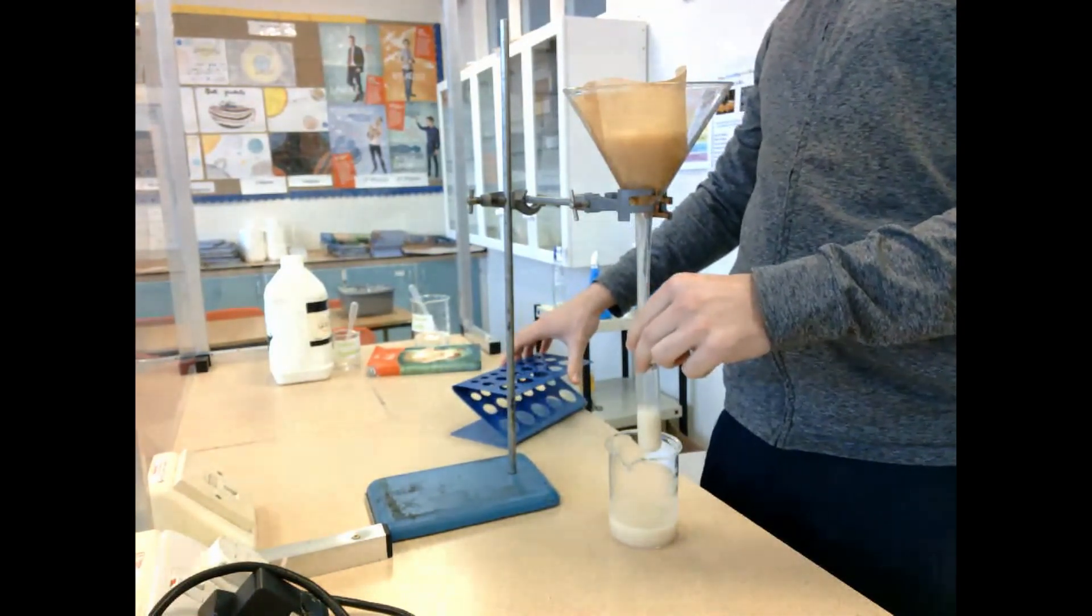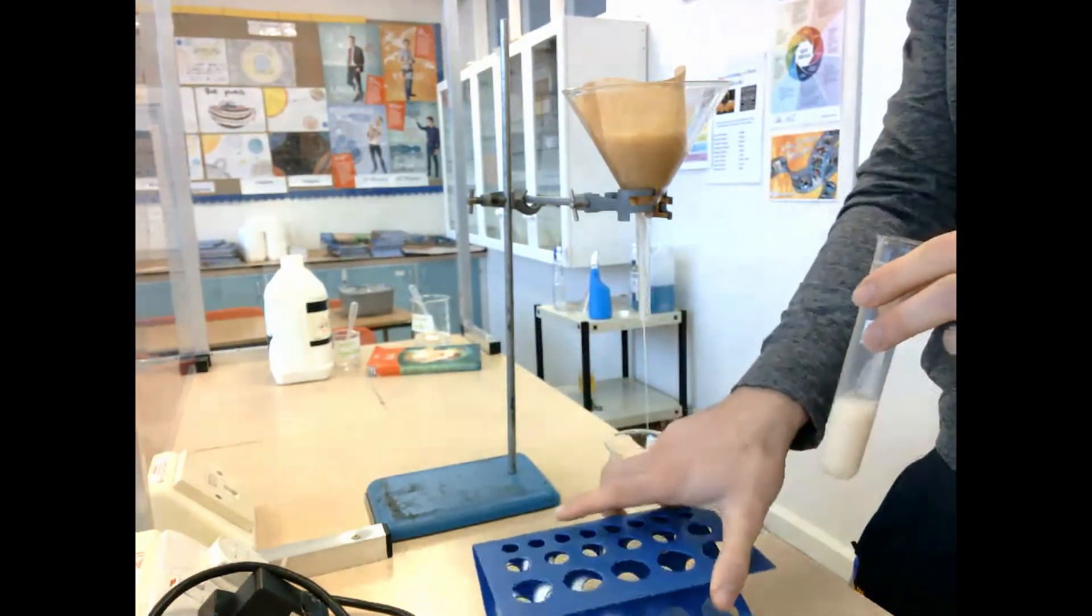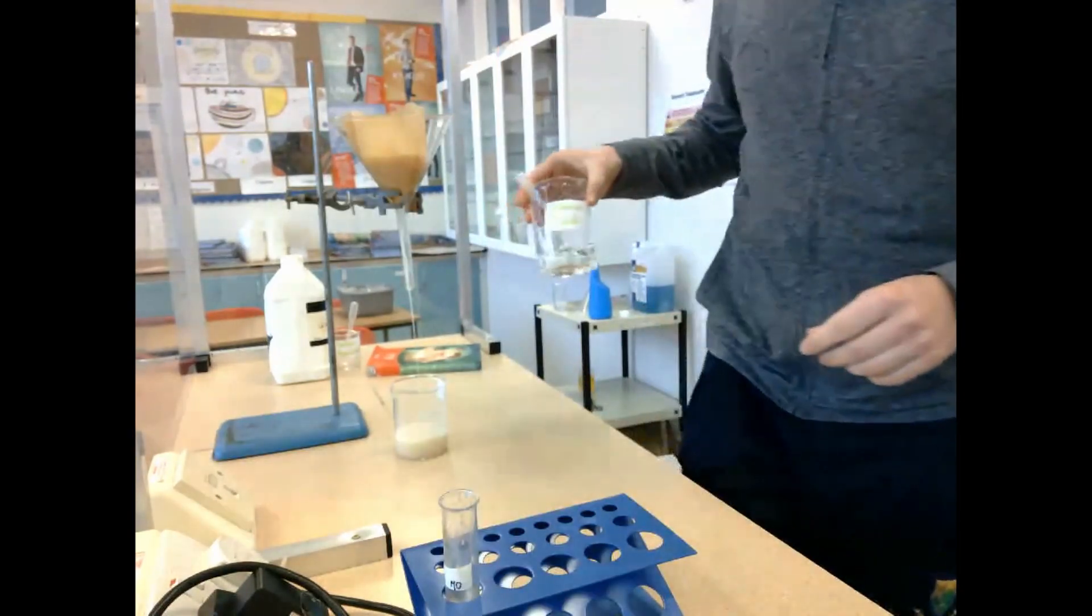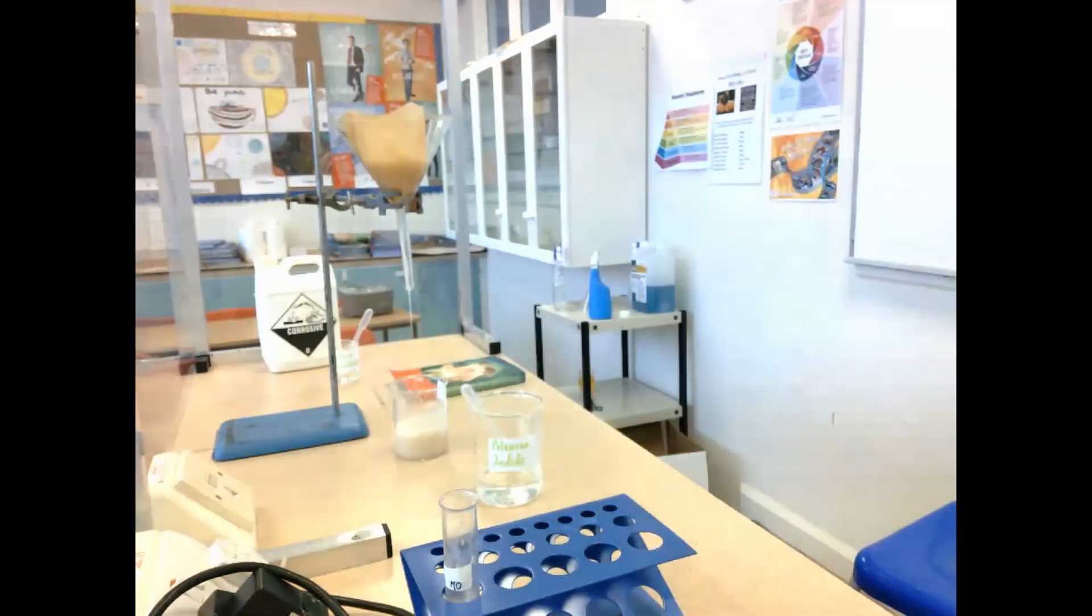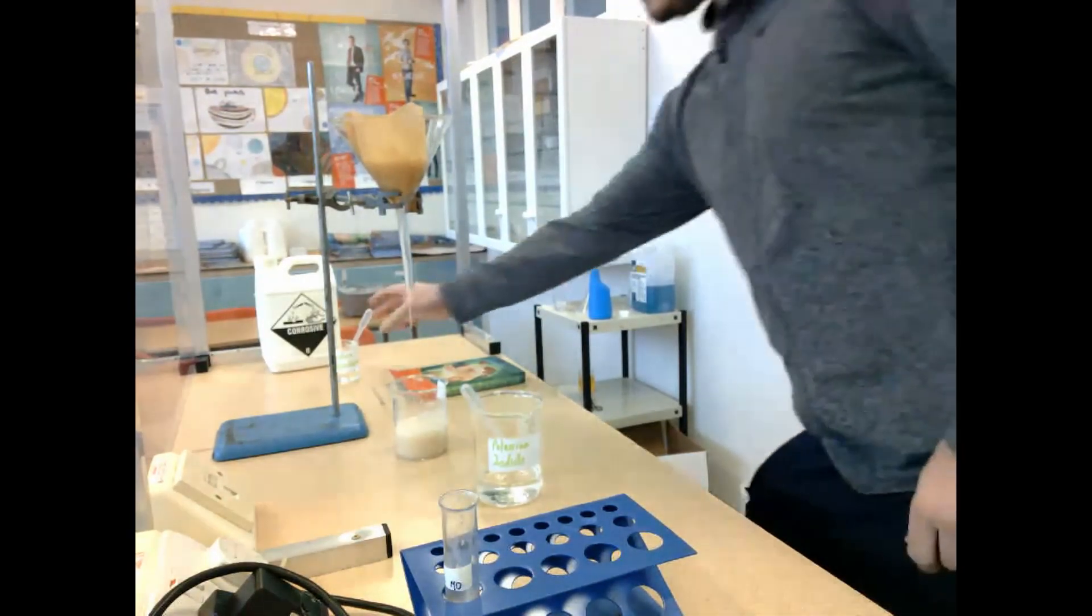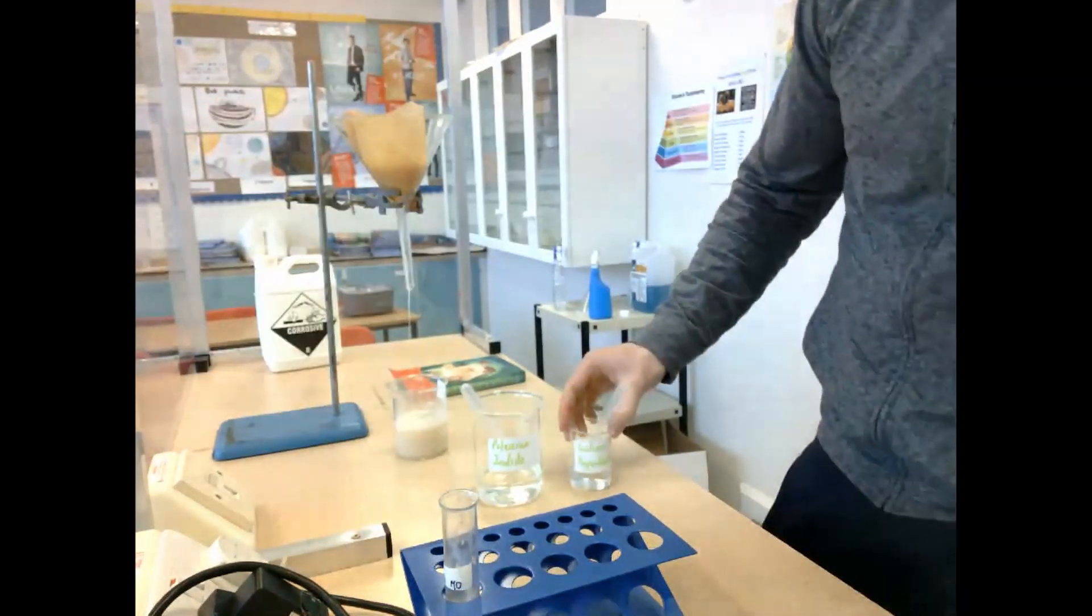Once we're pretty happy we have the filter going, we're going to take a test tube and gather some of that filtrate. We're going to fill the test tube about halfway and then place it into a test tube rack. We're going to get ourselves ready to test for the presence of alcohol, because we need two chemicals to do that: potassium iodide and then sodium hypochlorite.